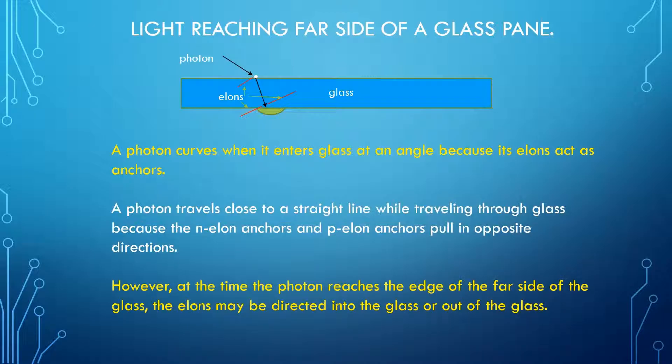However, at the time the photon reaches the edge of the far side of the glass, the elons may be directed into the glass or out of the glass. I examined this situation in a simple experiment. I directed a red pen light against a pane of glass at an angle, as shown in the next slide.